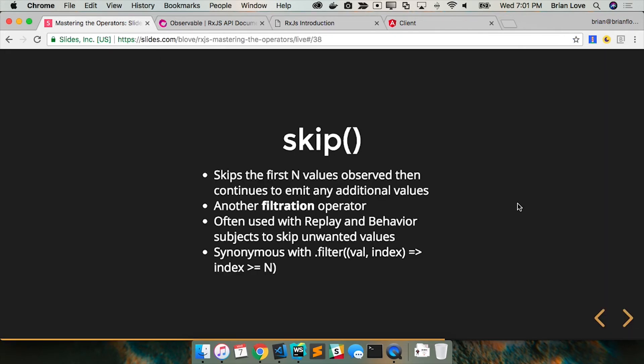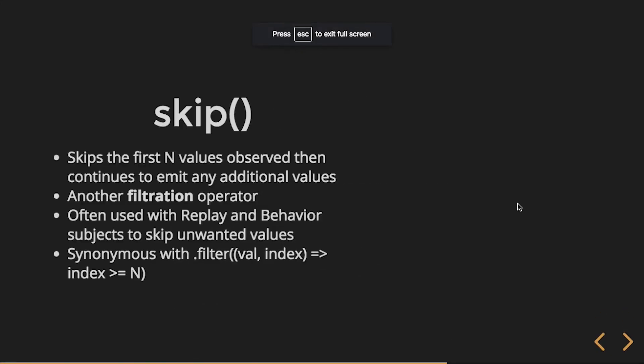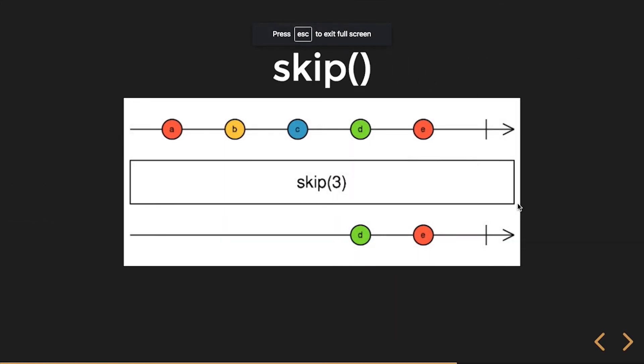And of course there's also skipWhile and skipUntil — you can skip until or skip while a condition is met. And you can see here on our marble diagram: we're skipping three, so we don't get A, B, and C — we only get D and E.